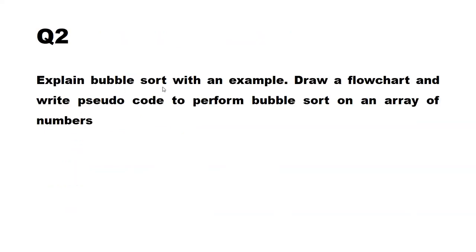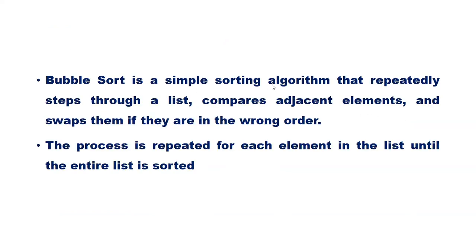Question number 2: Explain bubble sort with an example. Draw a flowchart and write pseudocode to perform bubble sort on an array of numbers. Bubble sort is a simple sorting algorithm that repeatedly steps through a list, compares adjacent elements, and swaps them if they are in the wrong order. The process is repeated for each element in the list until the entire list is sorted.